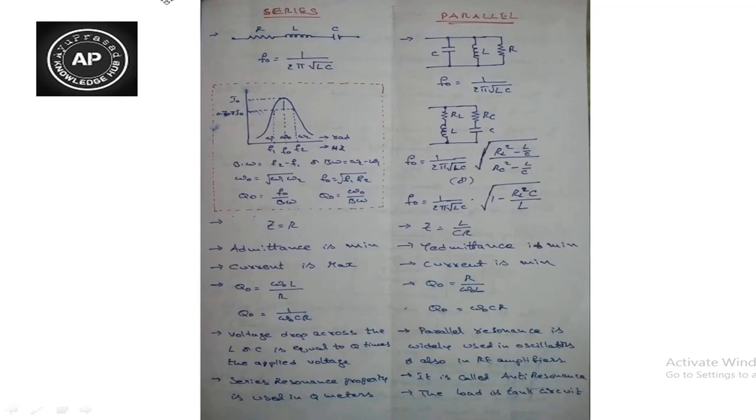In series resonance, a resistor, inductor, and capacitor - these three elements R, L, and C - are series connected with an AC source. In parallel resonance, these three elements are parallel connected with an AC source.